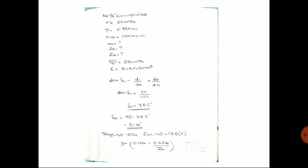First, we find the pitch angles: δ1 is the pitch angle of the pinion and δ2 is the pitch angle of the gear. Using the equation from page 215 and substituting d1 = 80 mm and d2 = 100 mm, we get δ1 = 38.6°. Since the total angle between the two axes is 90°, the pitch angle of the gear is δ2 = 90° − 38.6° = 51.4°.